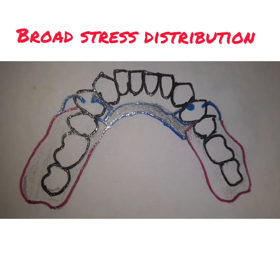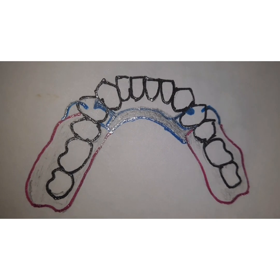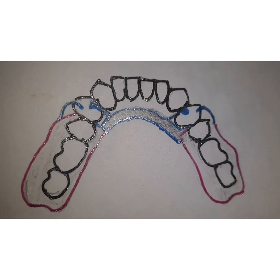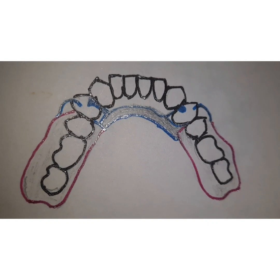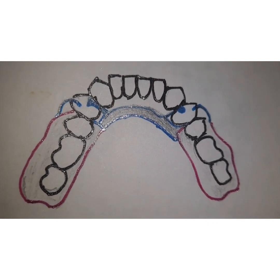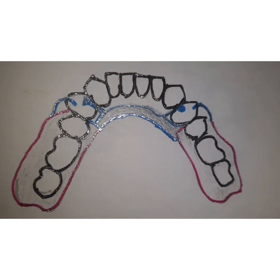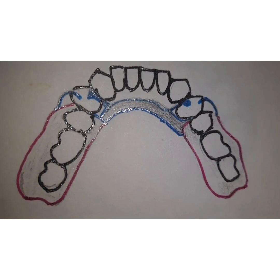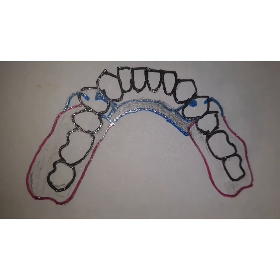The third concept is broad stress distribution. Proponents advocate wider stress distribution by using additional clasps, rests, and a broader denture base. When making an impression and designing the prosthesis, it should cover as much of the residual ridge and supporting structures as possible so that stresses are distributed over a wider surface area.